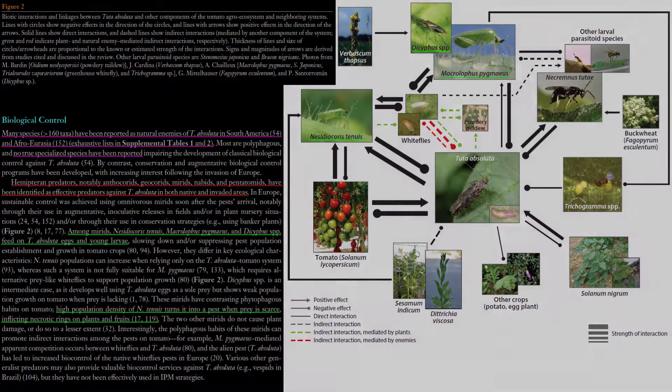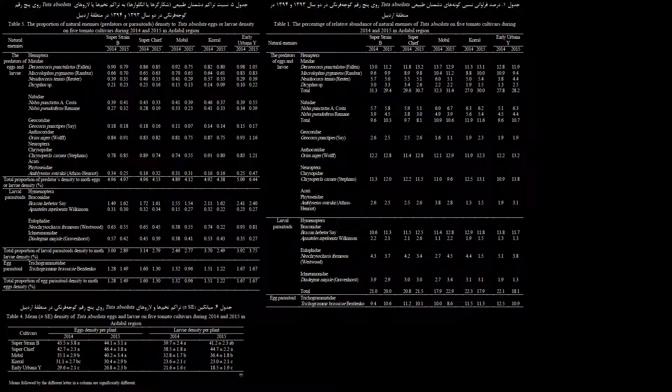Fathi found that the Early Urbana Wide tomato cultivar had the greatest proportion of predator density to moth eggs and larvae density: 5.09% in 2014 and 6.44% in 2015, the highest proportion of larval parasitoid density to moth larvae density: 3.92% in 2014 and 3.75% in 2015, and the greatest egg parasitoid density to moth egg density: 1.67% in both studied years, compared to Super Strain B, Super Chief, Mobile, and Coral.